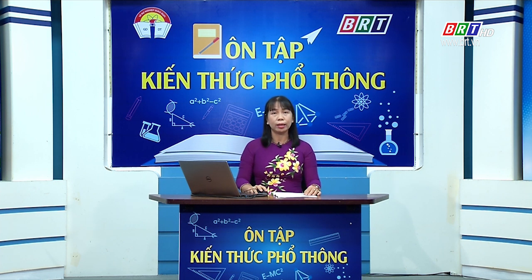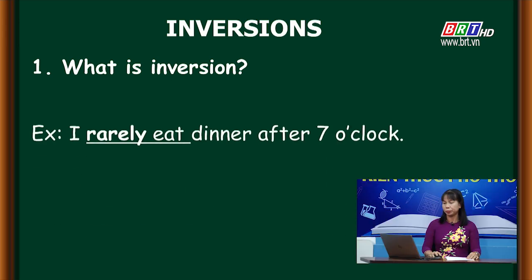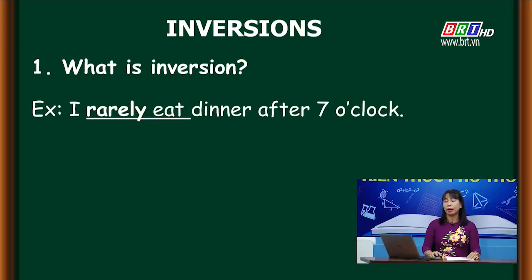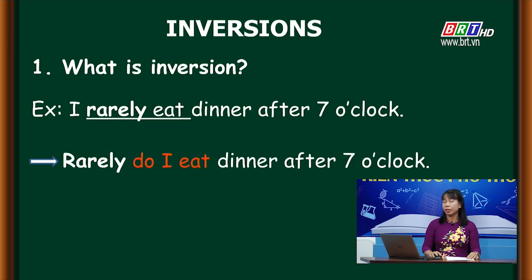What is inversion? Đảo ngữ là việc đảo trật tự thông thường của các từ ngữ trong một câu — nó giống như dạng câu hỏi. For example: 'I rarely eat dinner after 7 o'clock' becomes 'Rarely do I eat dinner after 7 o'clock.' Chúng ta thấy trạng từ 'rarely' được đảo lên đầu, và vì đây là thì hiện tại đơn, chúng ta dùng trợ động từ 'do' lên trước chủ ngữ.